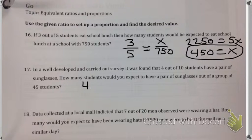We have a ratio of 4 out of 10, and that's going to be the same as if we had 45 students. How many of those 45 would have glasses? Again, a ratio set equal to a ratio is called a proportion.